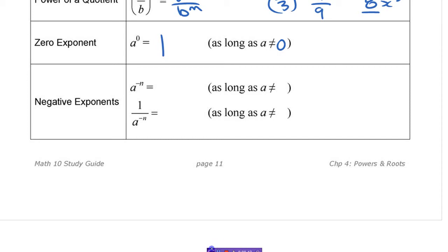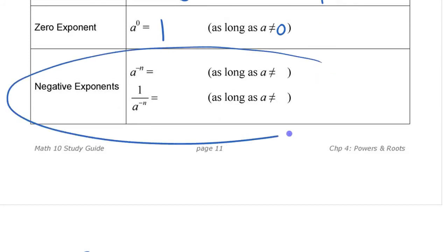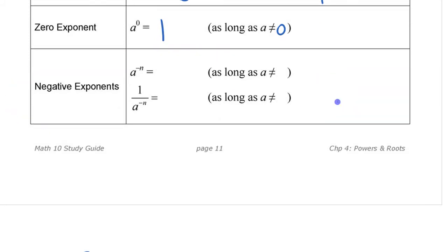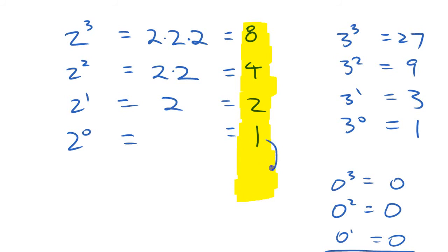That's everything hopefully you know from grade 9. But while we have that pattern, let's look at negative exponents. Once you have this pattern started, you can continue it. On this side we're dividing numbers by 2 each time — 8, 4, 2, 1 — so cut it in half again: a half, or 0.5.